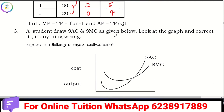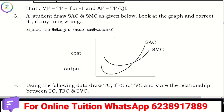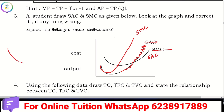A student wrote SAC and SMC as given below. Look at the graph and correct it if anything is wrong. We have to cut the SMC curve at the minimum point of the SAC curve. The SMC curve should cut the SAC curve at its minimum point. Correct the graph accordingly.